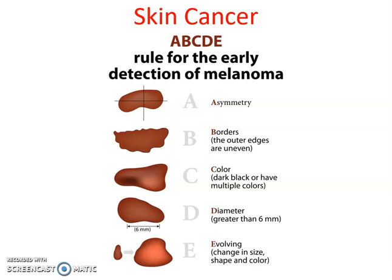I want to introduce the A, B, C, D, and E's of detecting skin cancer. Many of us have moles or freckles — areas on our body where increased melanin production makes the skin appear darker. What we're looking for is symmetry: we want a mole or freckle to be like an oval or circle. Asymmetry — an irregular shape — is one of the warning signs. These A, B, C, D, and E's are what you don't want to have.